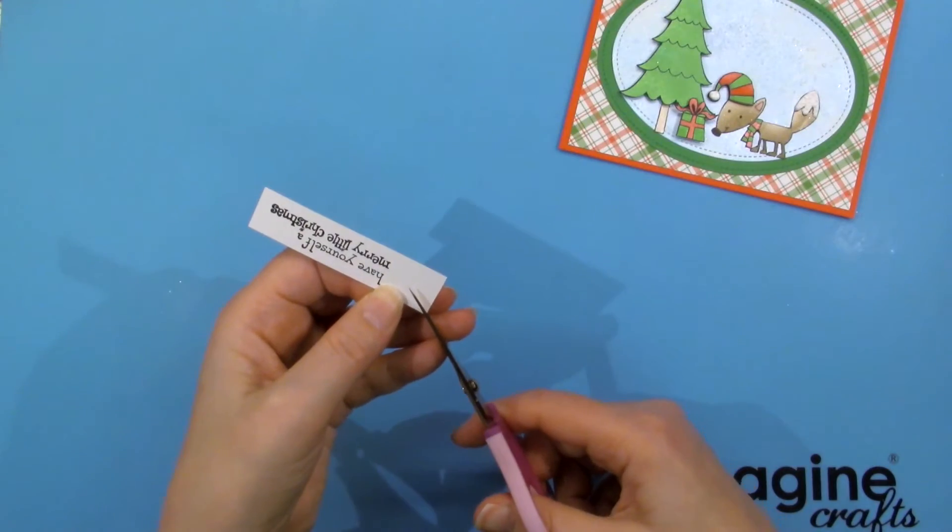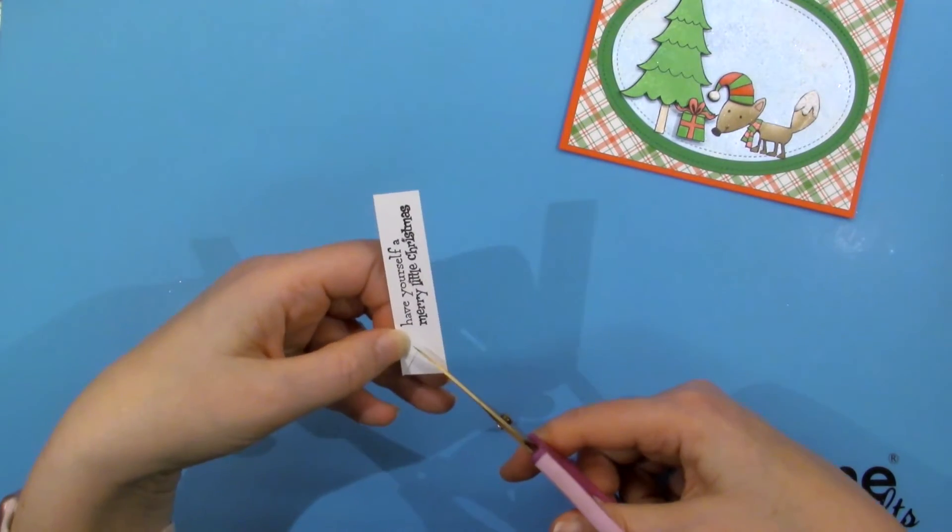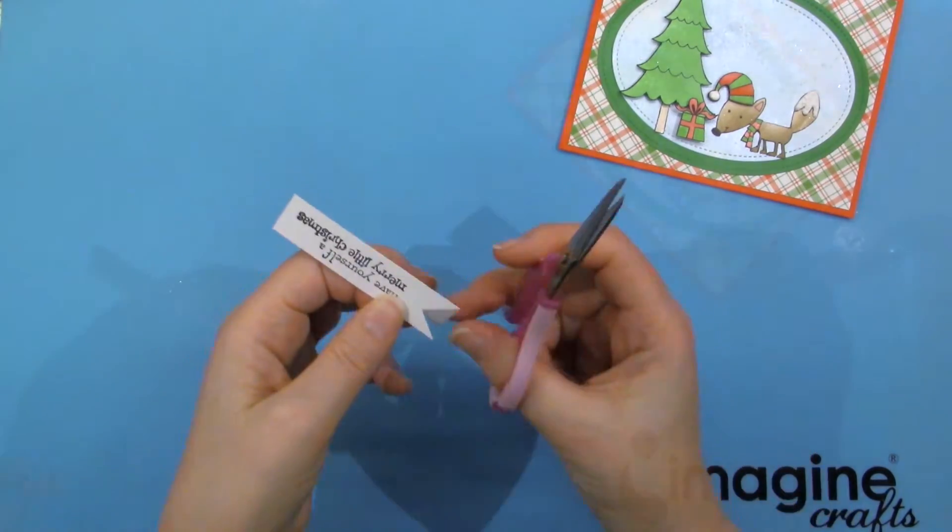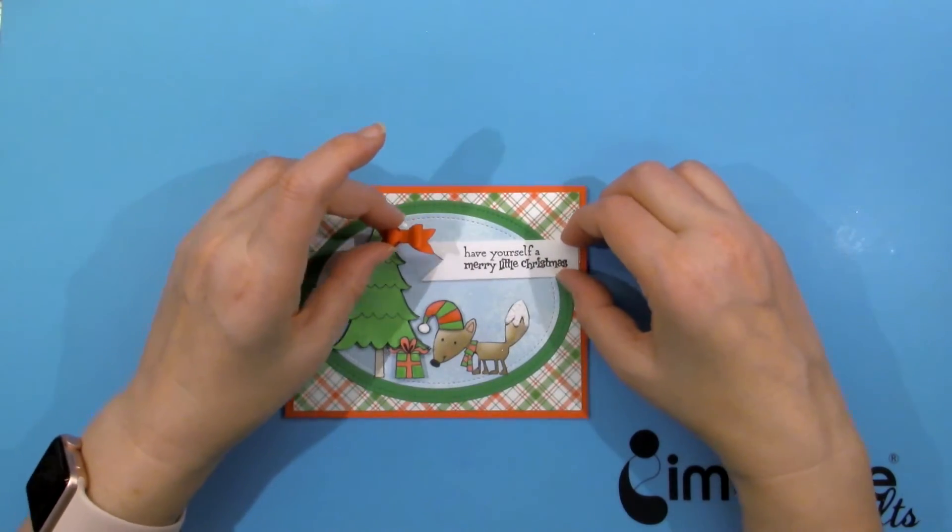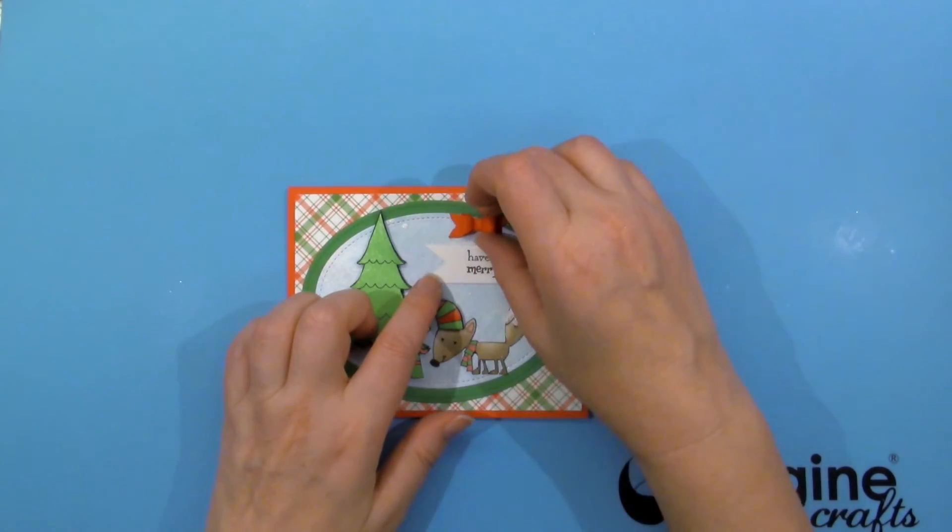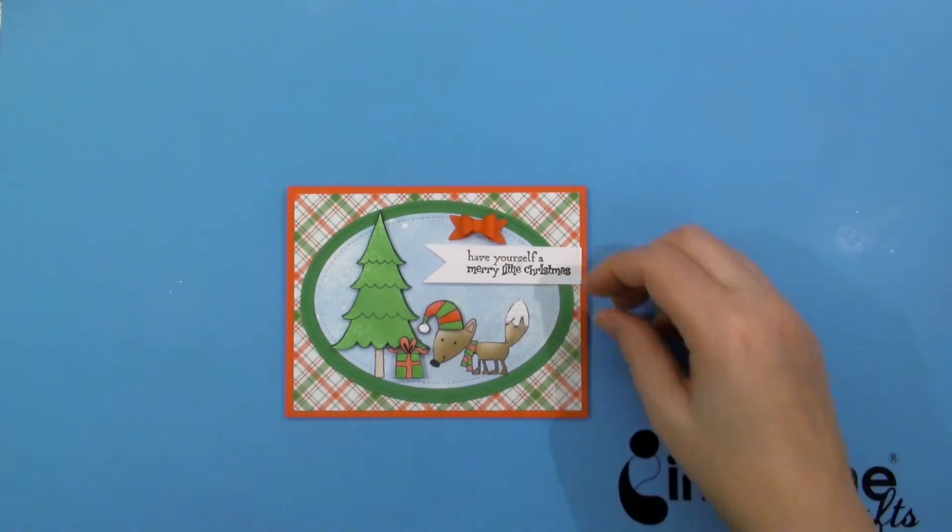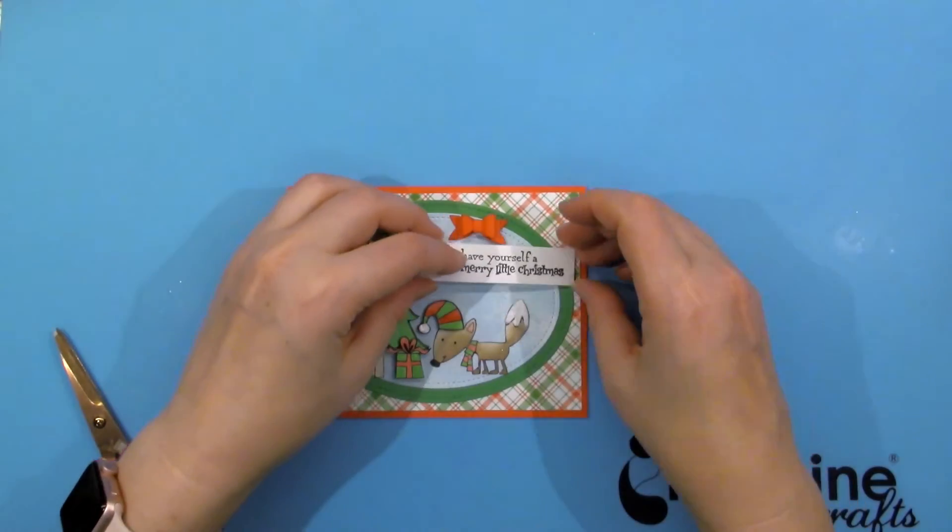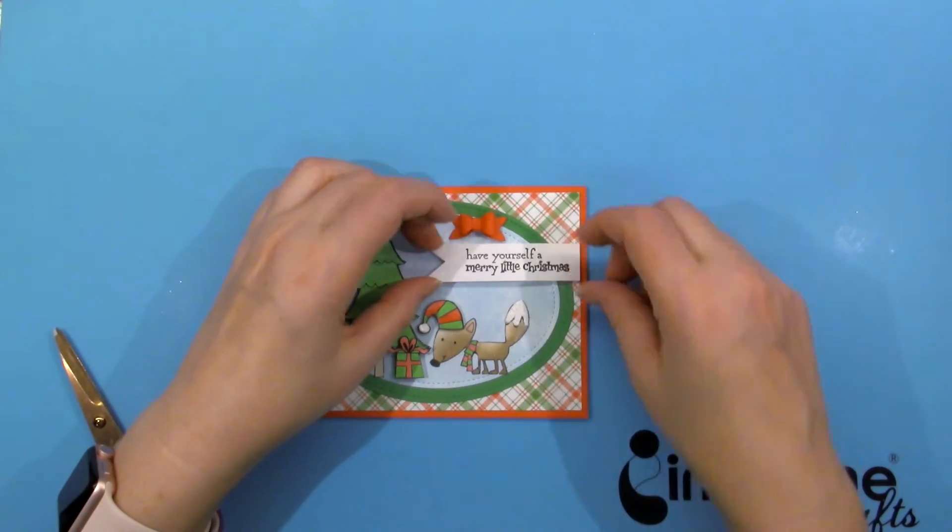I stamp my sentiment on a strip of white cardstock in versifying onyx black ink, then cut some tails. I also die cut a small bow as a finishing touch. I used dimensional tape to mount the sentiment, glued the bow in place, and the card was done.